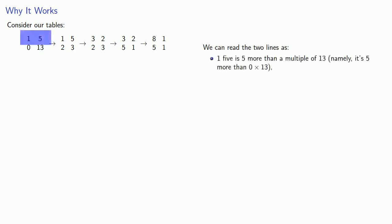So why does this work? Well, let's consider our tables. In our first table, we can read the two lines as follows. The first line says that 1 five is 5 more than a multiple of 13, namely it's 5 more than 0 times 13. Our second line can be read as 0 fives is 13 less than a multiple of 13, namely it's 13 less than 1 times 13.